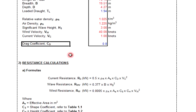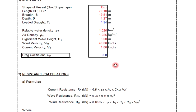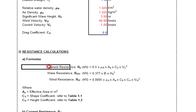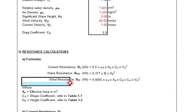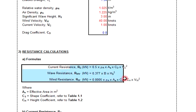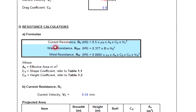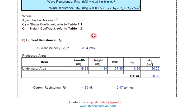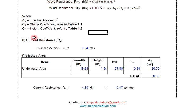To check the resistance calculation, you have to consider three components: current resistance, wave resistance, and wind resistance. These three items are very important to consider for the total resistance calculation.